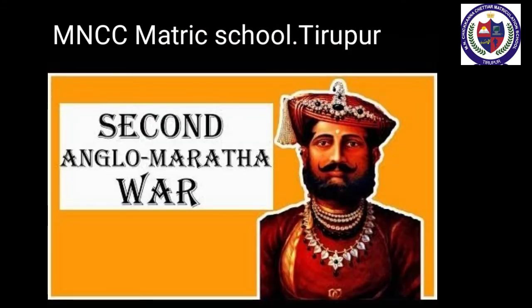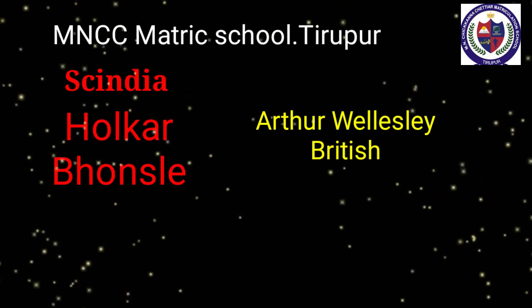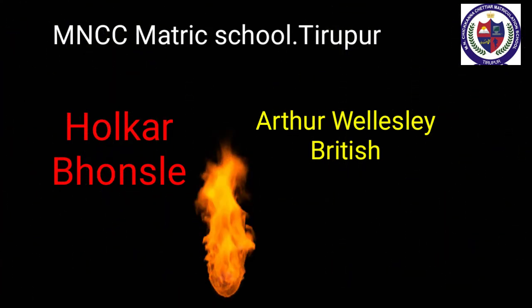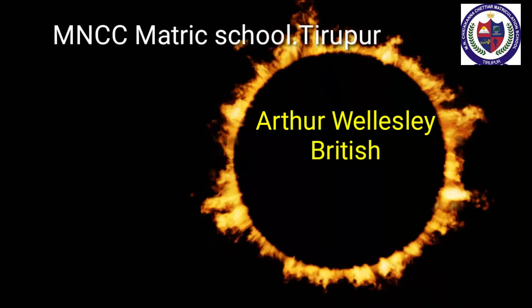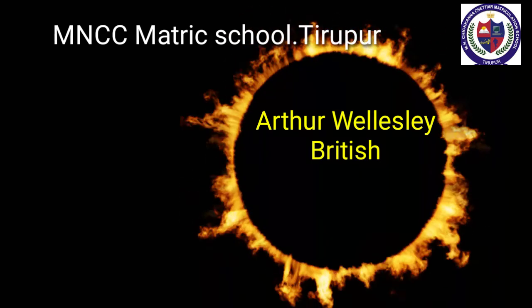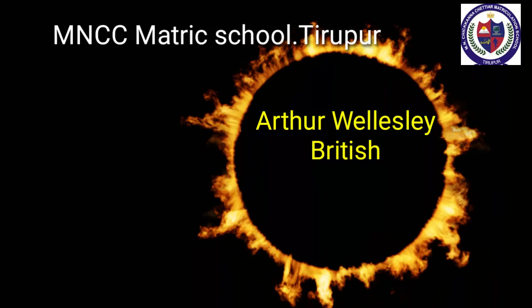The Second Anglo-Maratha War: After the Peshwa accepted the subsidiary alliance, Daulat Rao Sindhia and Raghuji Bhonsle attempted to save the Marathas. But the well-prepared, organised army of the English under Arthur Wellesley defeated the combined armies of Sindhia and Bhonsle and forced them to conclude separate subsidiary treaties, namely the Treaty of Deogaon and the Treaty of Surji-Arjangaon. Jaswant Rao Holkar tried to form a coalition of Indian rulers to fight against the British, but the English defeated the Marathas.